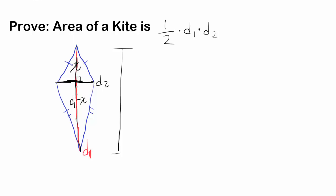So what is the area of this triangle? How can you find the area of this triangle? Well, the base is D2 and the height is X. So area of, let's call this triangle 1, is going to be X times D2 over 2. Base times height over 2.